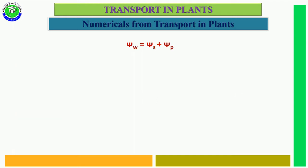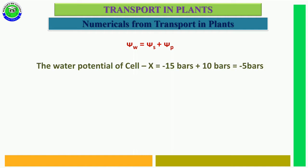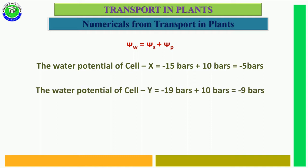The formula is: ψW = ψS + ψP. First we identify the water potential of each cell. The water potential of cell X = minus 15 bars + 10 bars = minus 5 bars. The water potential of cell Y = minus 19 bars + 10 bars = minus 9 bars.